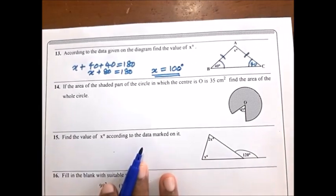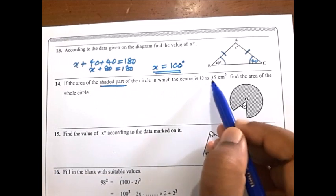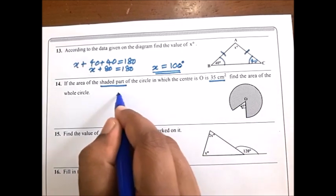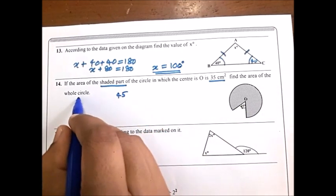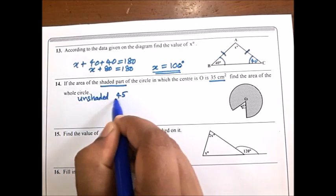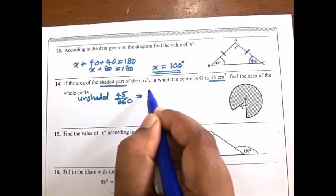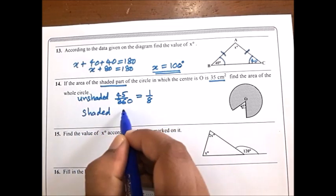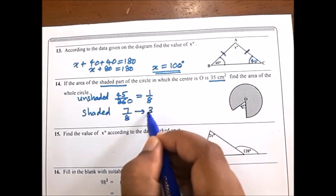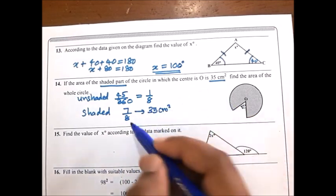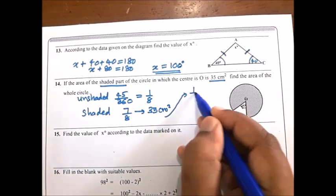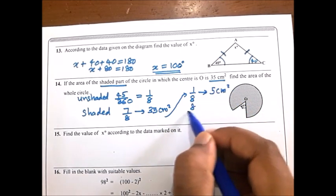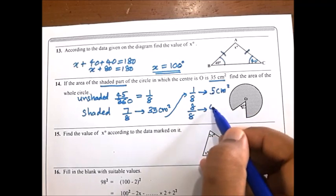Look at the 14th question. The area of the shaded part is 35 square centimeters. The unshaded part is 45 degrees, which as a fraction is 45 over 360, or 1 over 8 of the figure. Therefore the shaded part is 7 over 8, representing 35 square centimeters. If 7 over 8 is 35, divide by 7 to get 5 square centimeters per eighth. The total area is 5 multiplied by 8 equals 40 square centimeters.